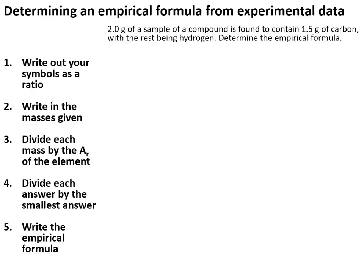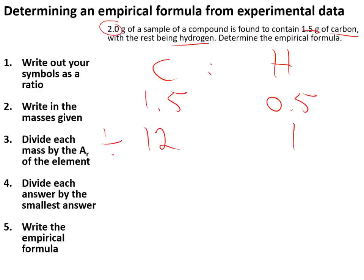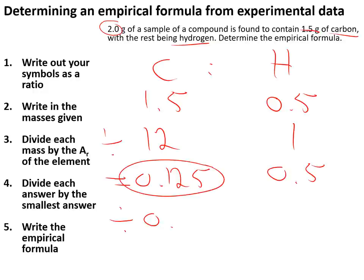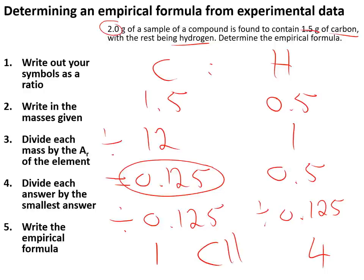To determine an empirical formula from experimental data, write down the symbols as a ratio and write in the data. For carbon and hydrogen: carbon is 1.5 g, and since the total mass is 2 g, hydrogen is 0.5 g. Divide each by the relative atomic mass — carbon by 12 gives 0.125, hydrogen by 1 gives 0.5. Then divide both by the smallest value (0.125): carbon gives 1, hydrogen gives 4. So the empirical formula is CH4.